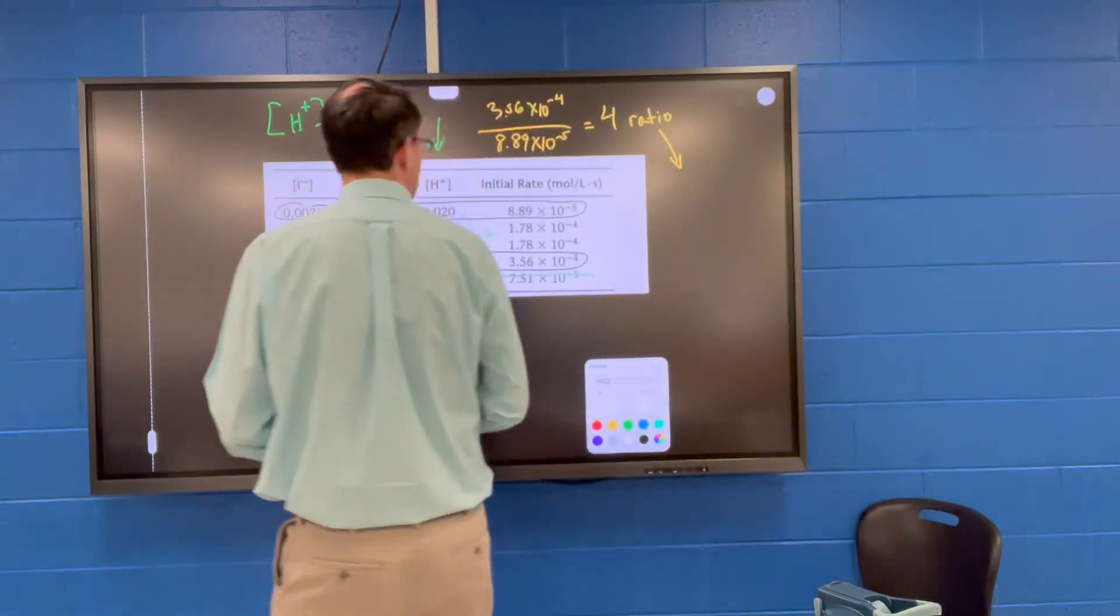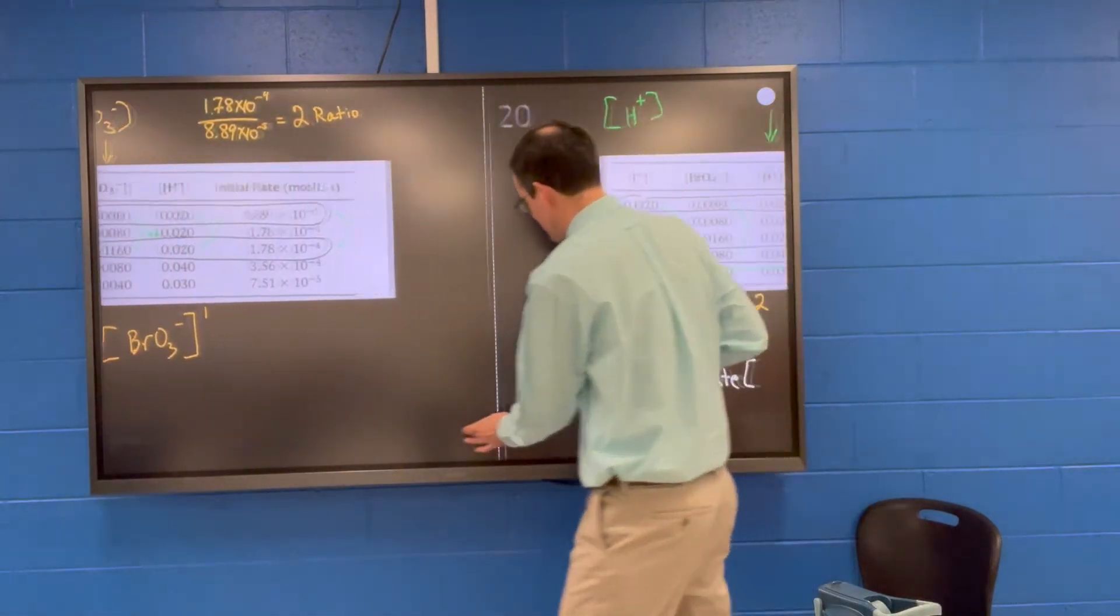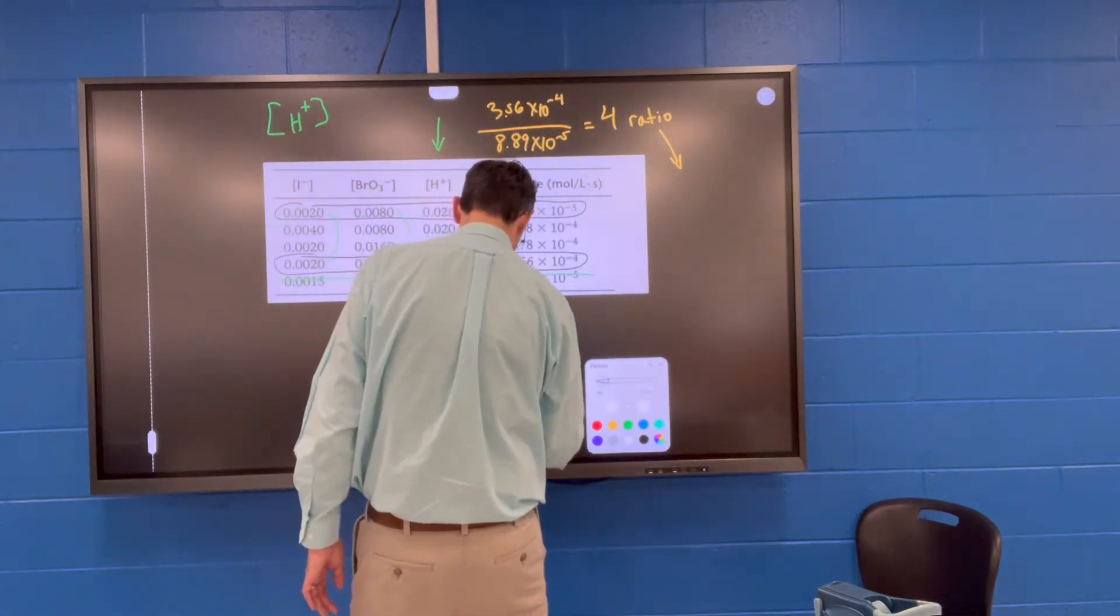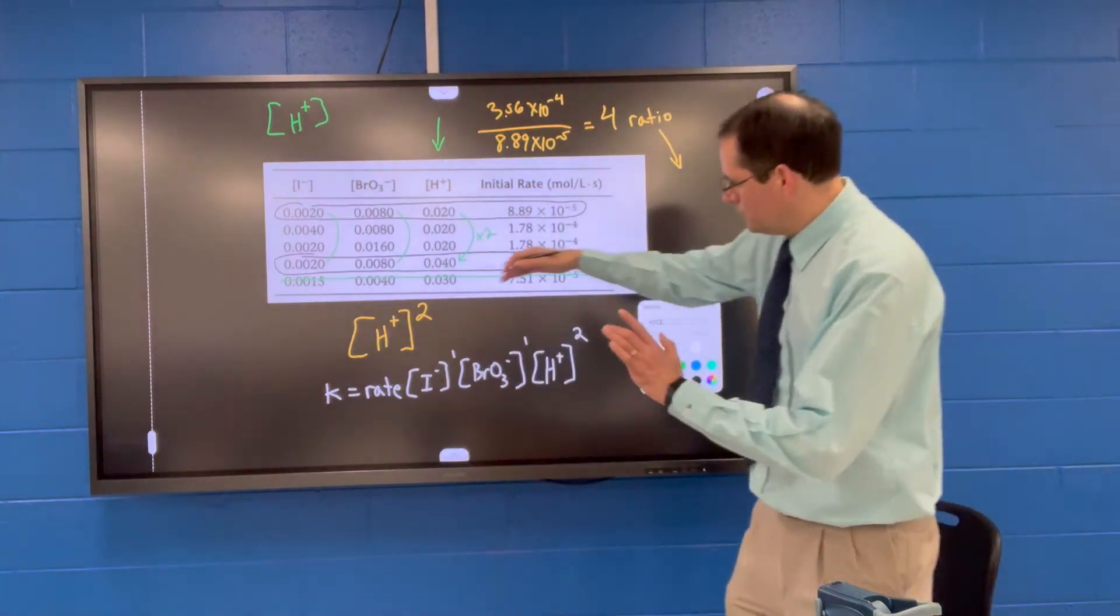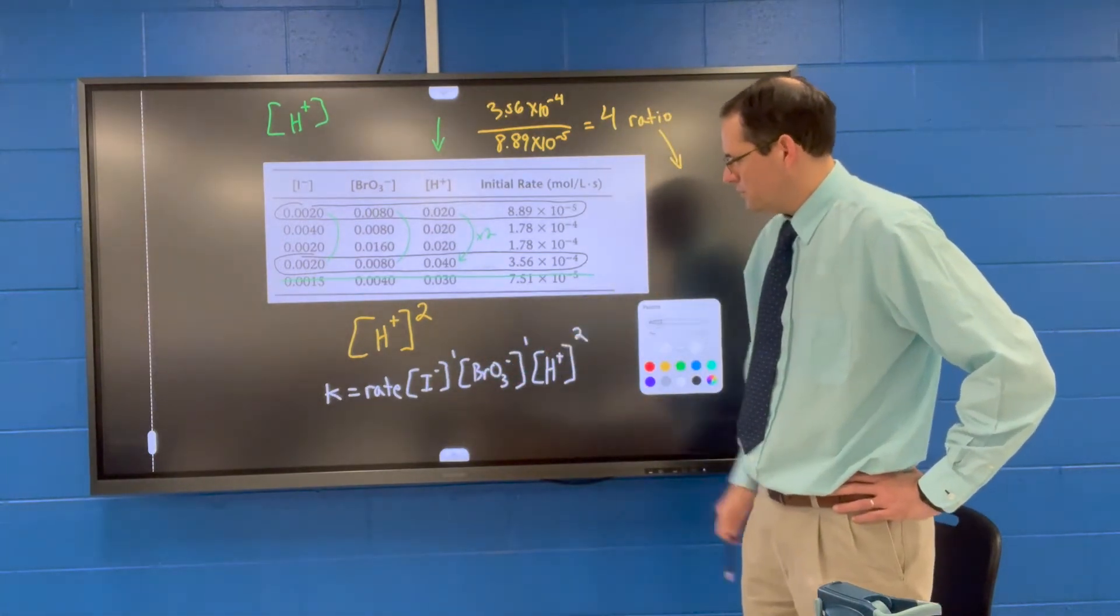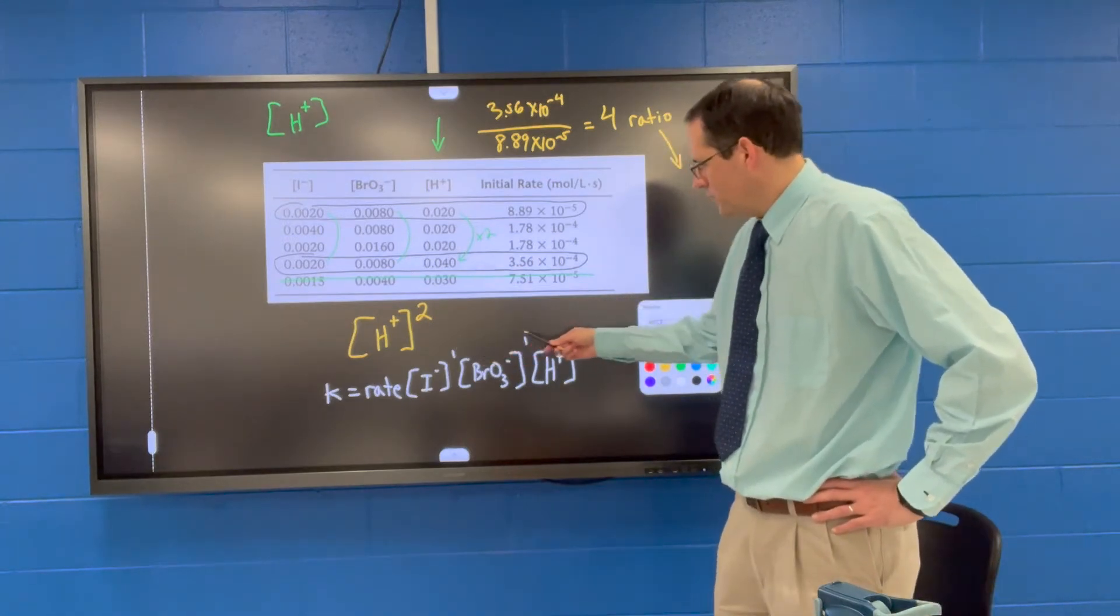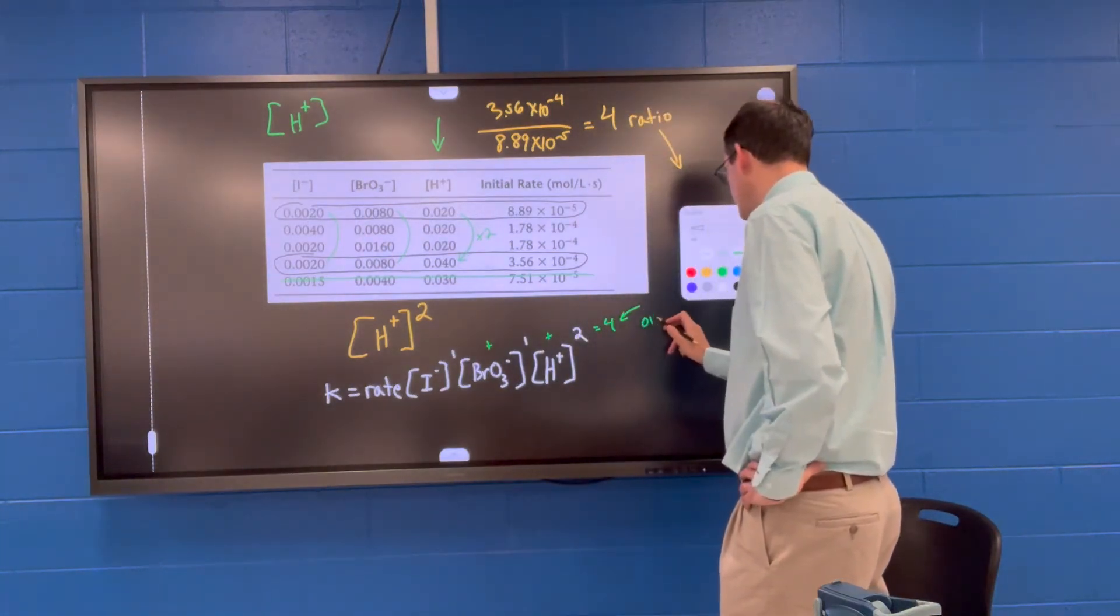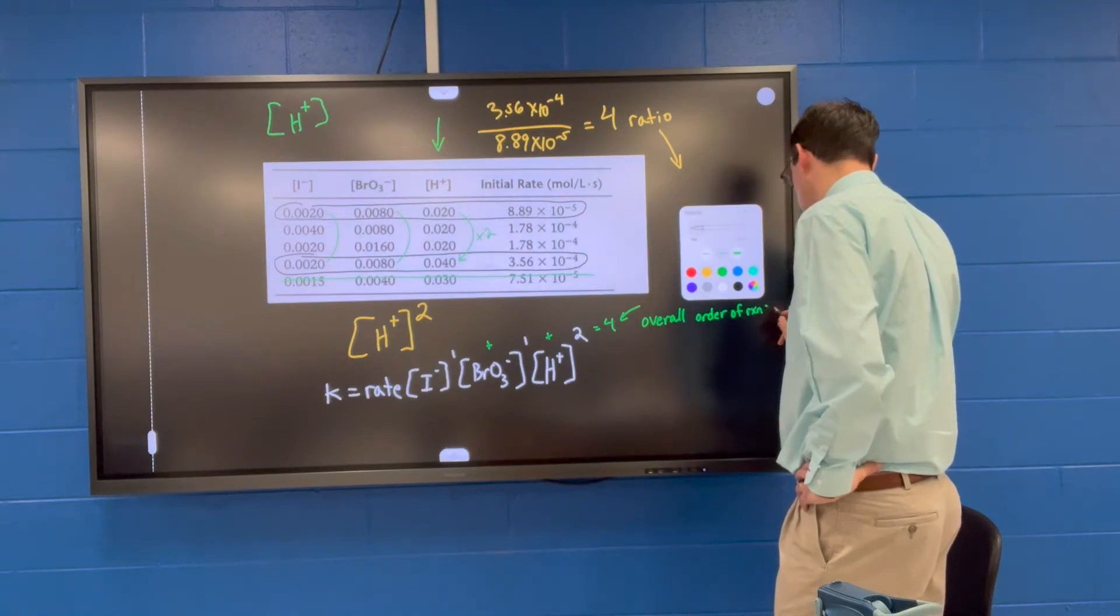So the rate law for this. We said that the other previous ones were to the first power. Make sure that your analysis goes with the correct chemical. So iodide, the order is one with respect to iodide. The order is one with respect to bromate. The order is two with respect to the hydrogen ion. The total order is one plus one plus two or four. So the overall order of the reaction is equal to four.